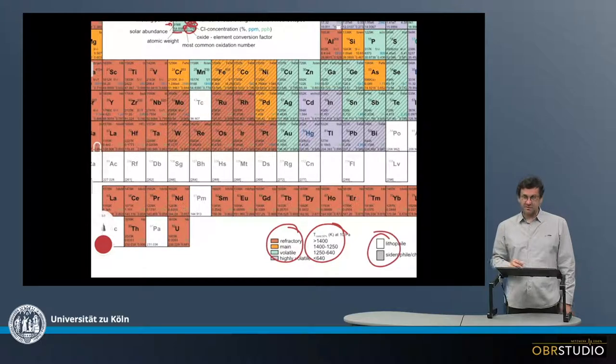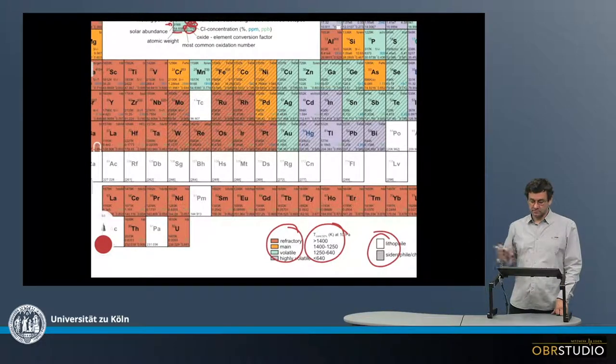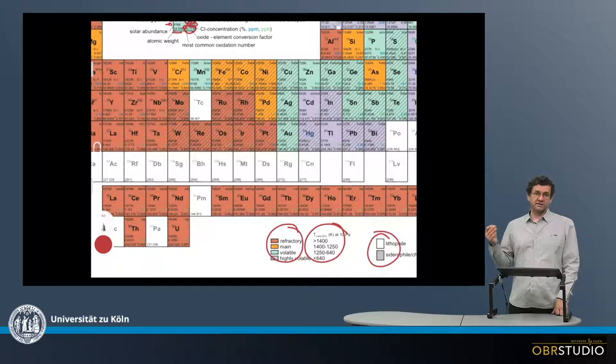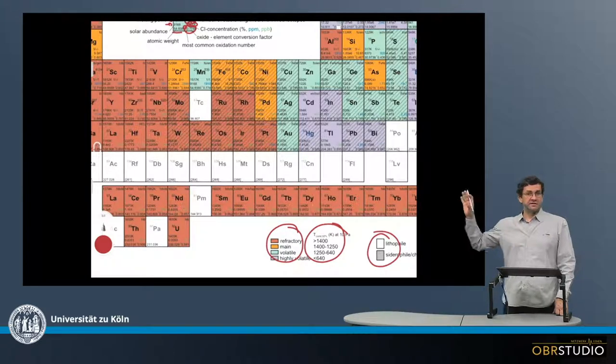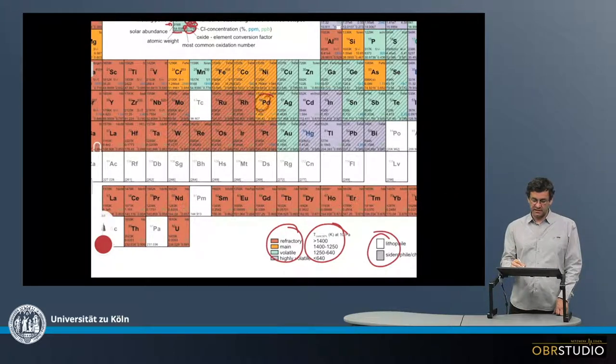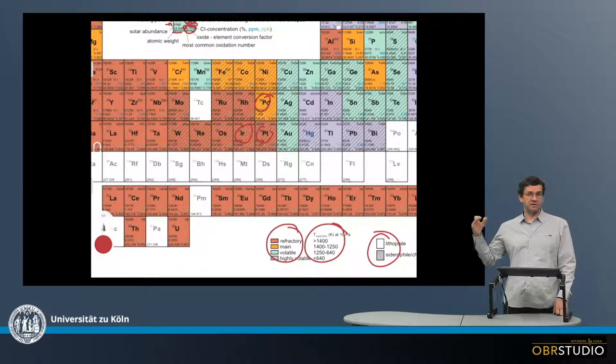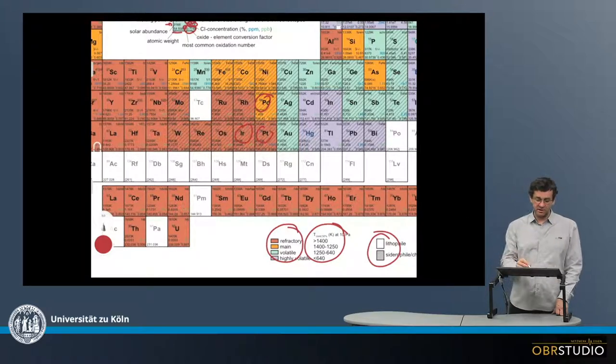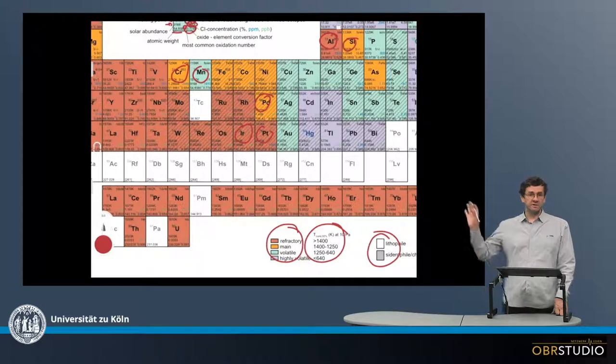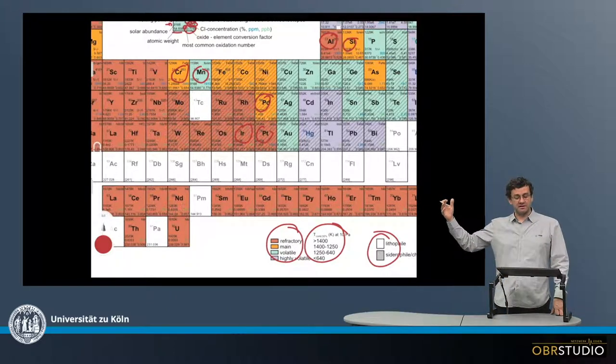And then the fields are either plain or have these lines, and the lines indicate that these are siderophile elements, something like palladium, platinum, iridium, and so on, are of course siderophile elements, while manganese, chromium, or aluminum, silicon, and so on, these are all the lithophile elements.